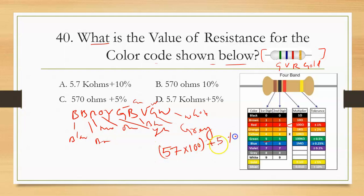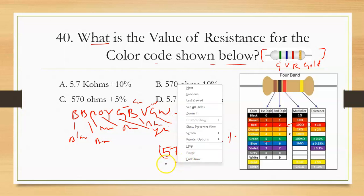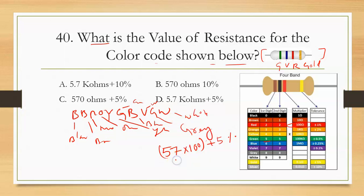So the value is 57 × 100 = 5700 ohms, which is 5.7 kilo-ohms. The correct answer is 5.7 kΩ.